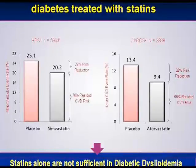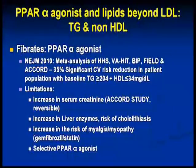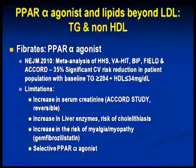This slide categorically shows that residual CV risk remains — whether we talk of HPS or the CARDS study, 68 to 78% residual CV risk remains. Looking beyond the LDL to triglycerides and HDL: in a meta-analysis, there was a 35% significant CV reduction in patients with baseline triglyceride ≥204 with low HDL. However, fibrates have limitations: creatinine goes up, liver enzymes derange, there is a risk of cholelithiasis, and myalgia/myopathy — especially with fenofibrate and statin combination.